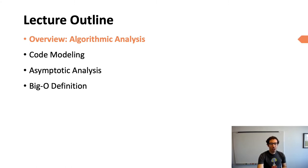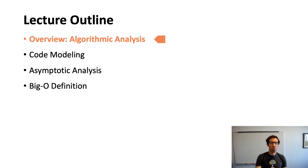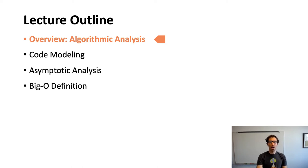Our outline for today: we're going to start out with an overview of algorithmic analysis, then talk about the two pieces, and finally end with the formal definition of big O.